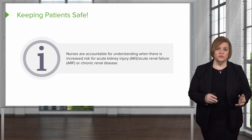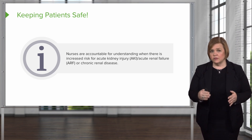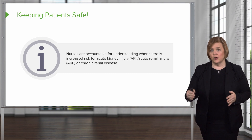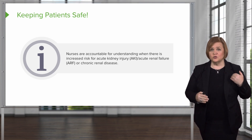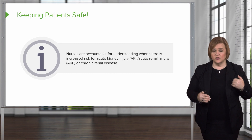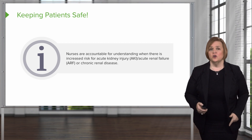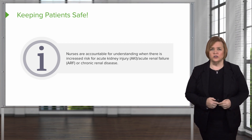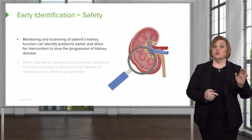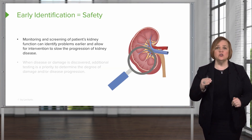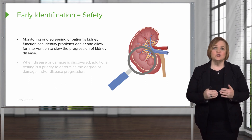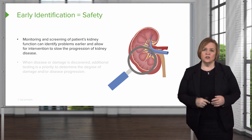At the other end of the time spectrum is chronic renal disease. This isn't an acute event — this is kidney damage and deterioration that has happened over a period of time. Our job as nurses is to understand when patients are at increased risk for acute kidney injury and to watch patients with chronic renal disease very closely. Because early identification equals increased safety for your patients.